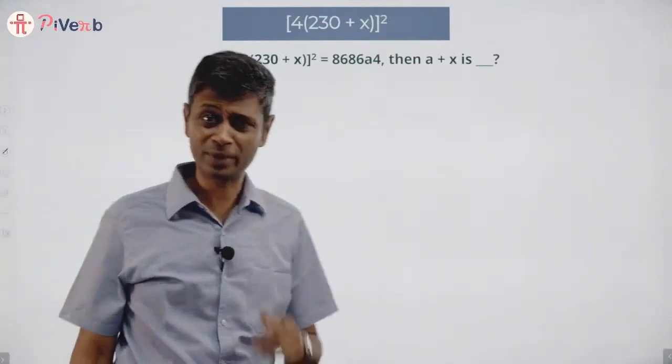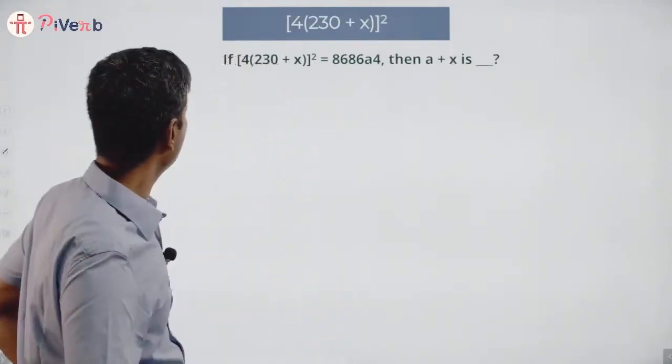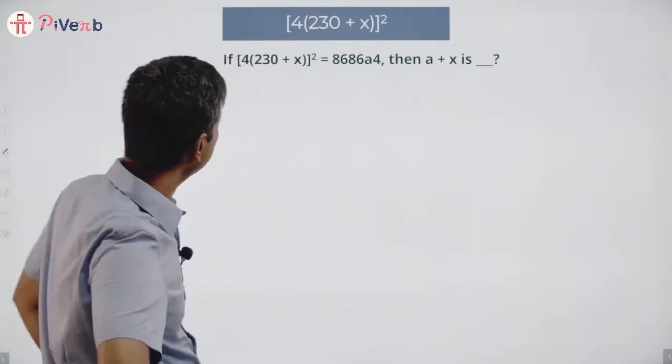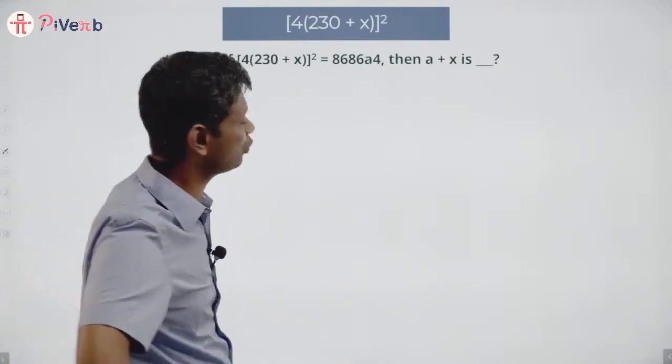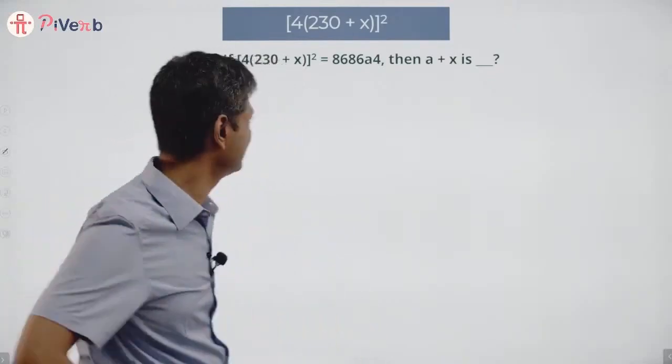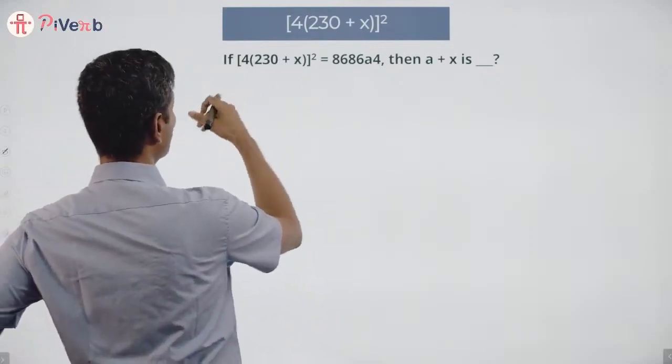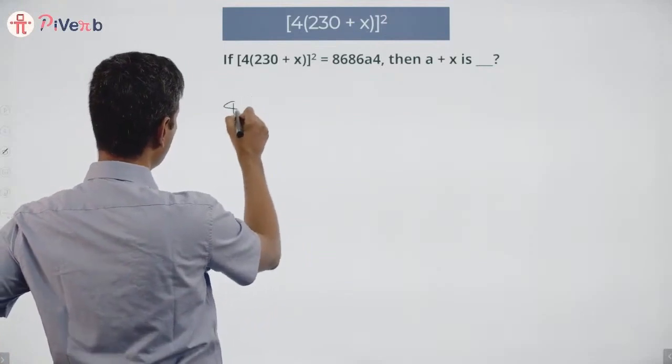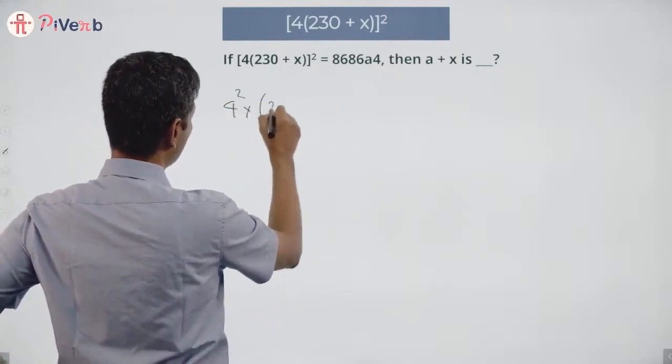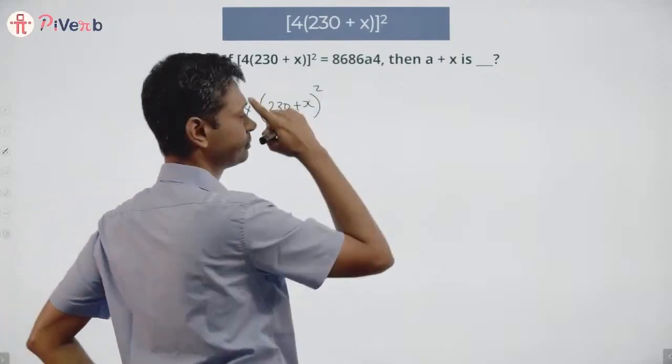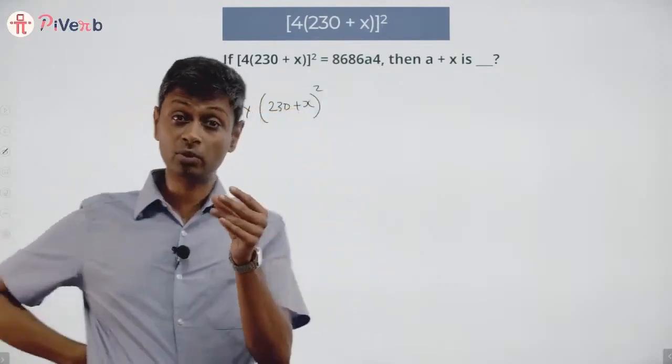My favorite question, a beautiful question. 4(230 + x)² equals 8686a4. If you square this and have a multiple of 4 squared, that means this will be 4² into (230 + x)². You have a number that's a multiple of 4 and you square that.